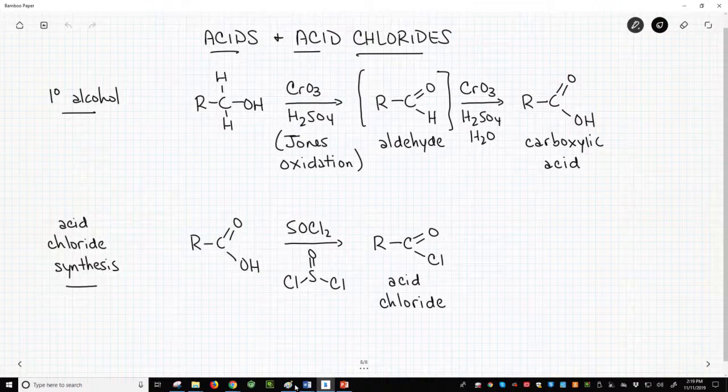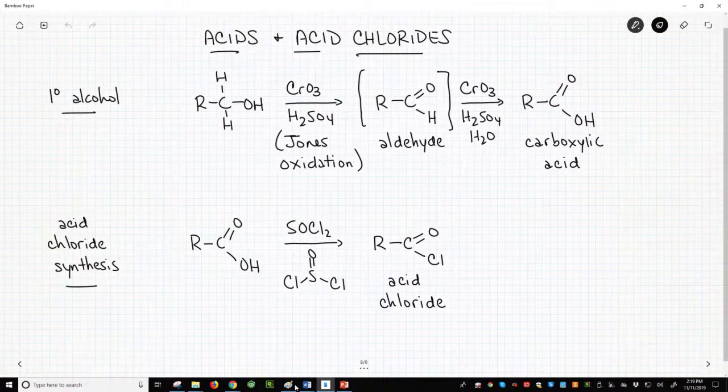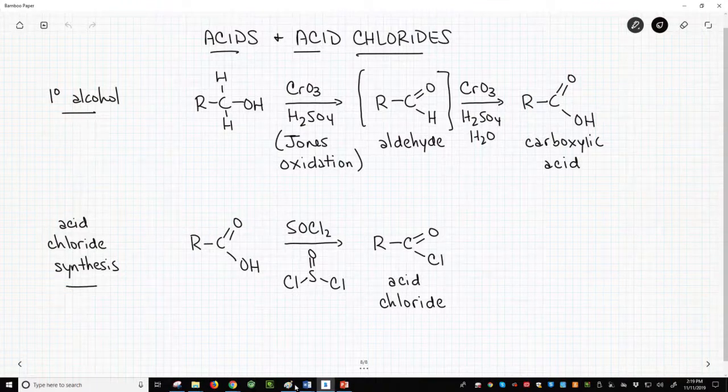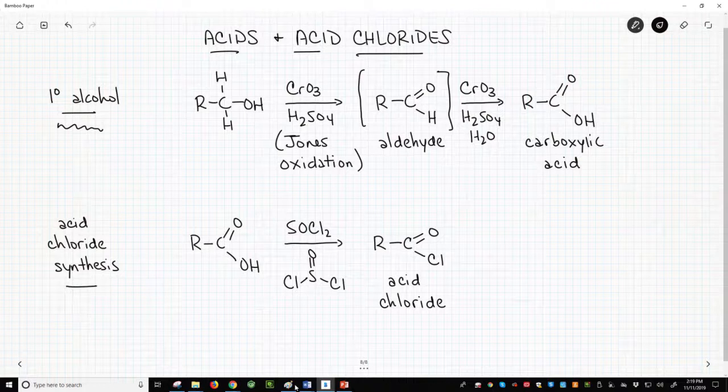To do acid derivative interconversions, one needs a carboxylic acid. One of the most common ways to make a carboxylic acid is by oxidation of a primary alcohol with chromium trioxide and sulfuric acid in something called the Jones oxidation.